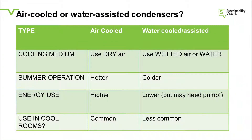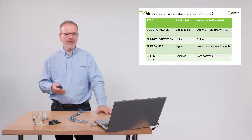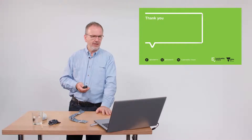So air-cooled or water-assisted — what are the pros and cons? The cooling medium for air-cooled is dry air; for water-cooled or water-assisted it's either wetted air or water. In summer operation, the air-cooled system runs hotter while the water-assisted system runs colder, so the energy use of the air-cooled system will be higher and the wetted system lower. Unfortunately the air-cooled system is the more common one, and the less common one is the more efficient — so there's significant potential for improvement, and I'll show you a few ways of doing that later on.